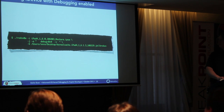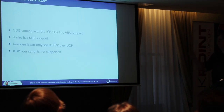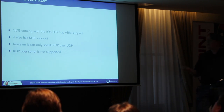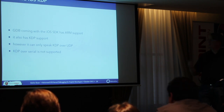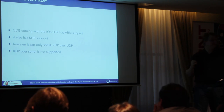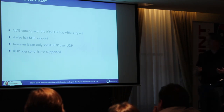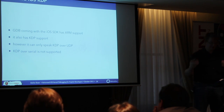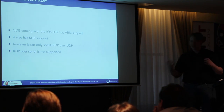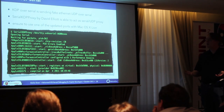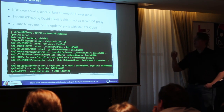You need GDB with ARM support. Normal Mac OS GDB doesn't have ARM support, but the iOS SDK included a GDB binary with ARM and KDP support — however only over UDP. Since KDP on the device is serial, we need the helper application called Serial KDP Proxy.